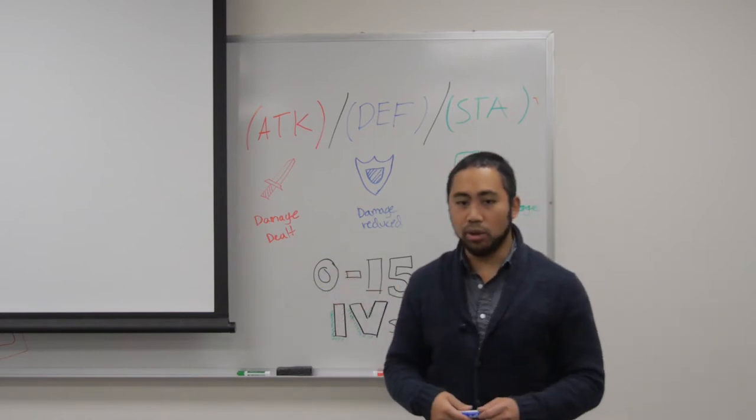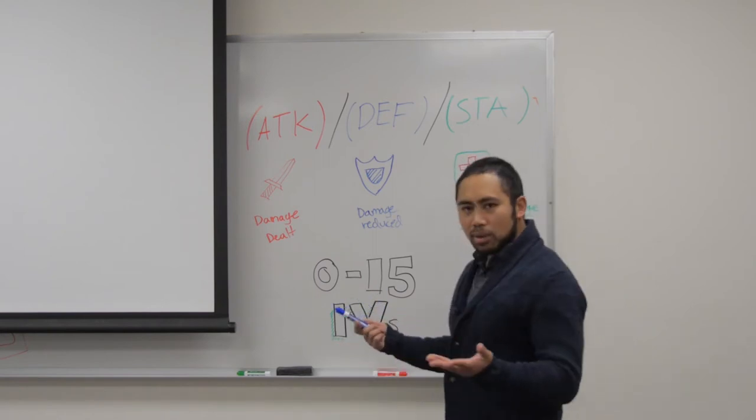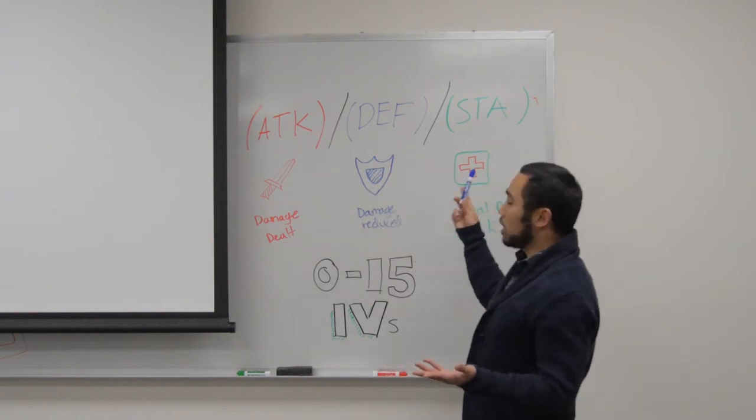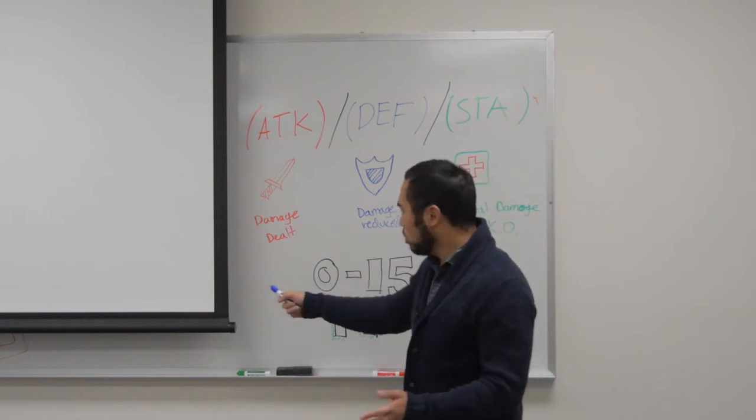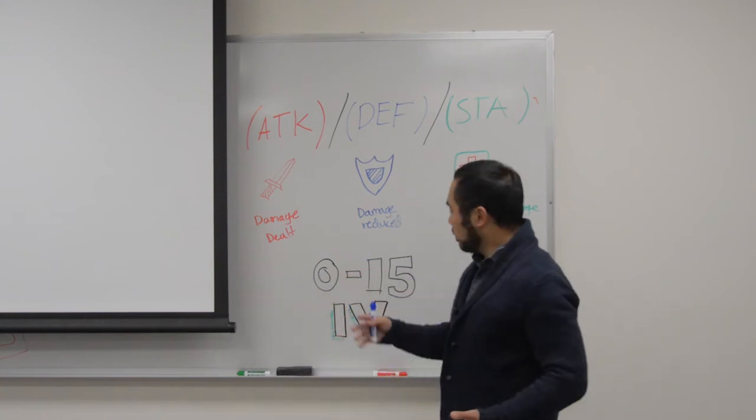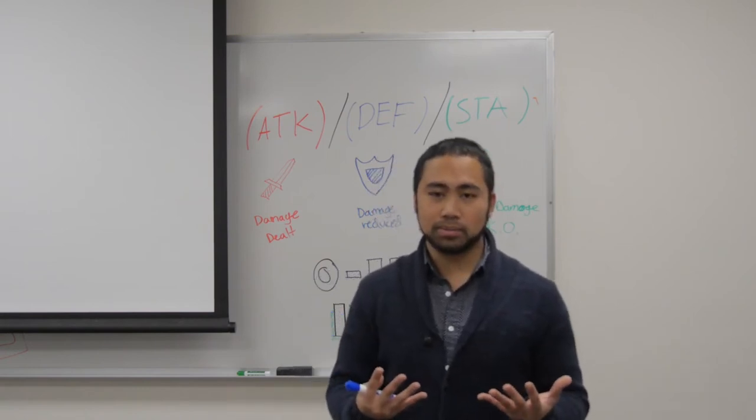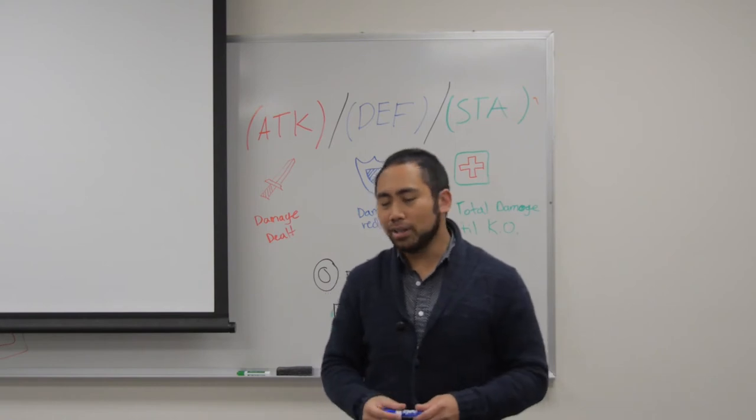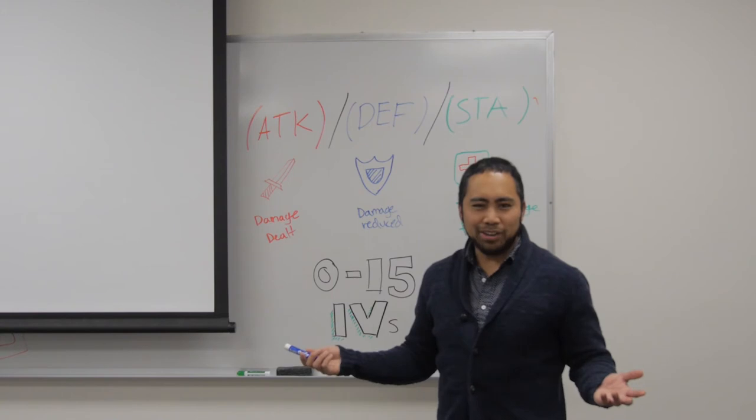So for example, a 100% Pokemon would be something with an Attack stat of 15, Defense stat of 15, and a Stamina stat of 15. But it also comes in different flavors as well. It can go completely 0 or any number in between. But these numbers influence how your Pokemon perform in battle. But 15, 15, 15. Does it really matter?